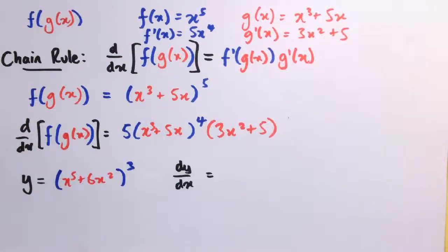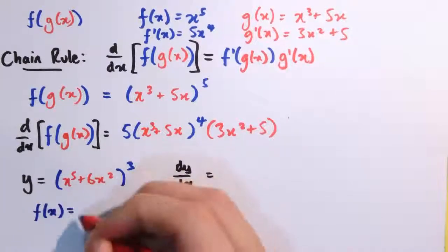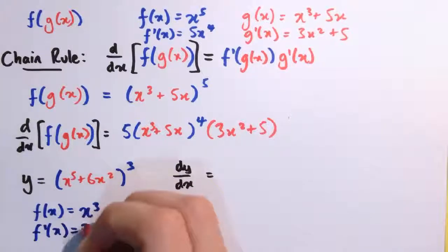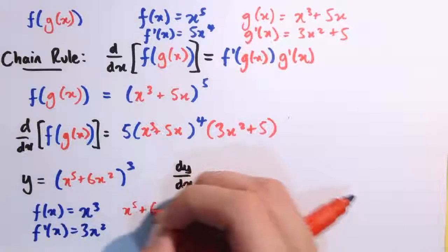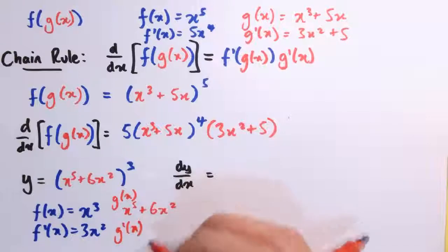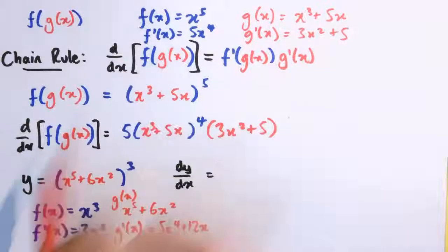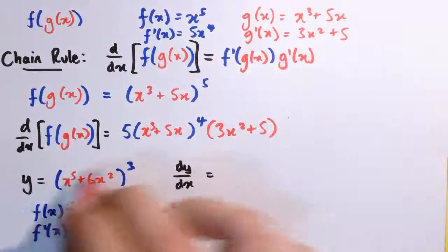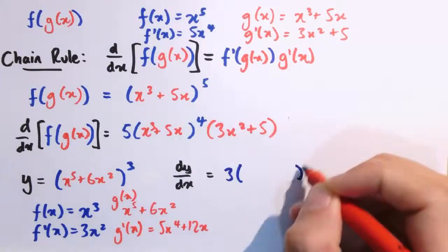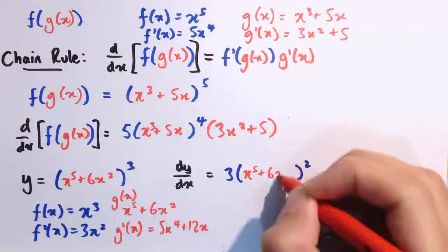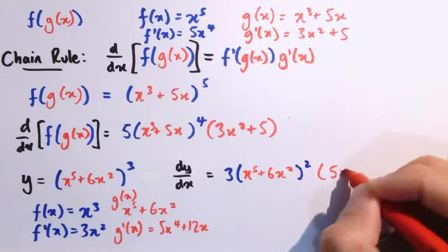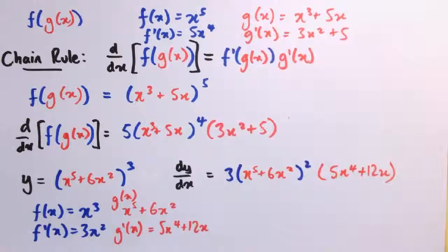Let's take another example. If y equals x to the 5 plus 6x squared, all cubed, then f of x is x cubed, so f dash of x is 3x squared. The inside function g is x to the 5 plus 6x squared, so g dash of x is 5x to the 4 plus 12x. Applying the chain rule, dy by dx equals 3 times x to the 5 plus 6x squared, all squared, multiplied by 5x to the 4 plus 12x. That's the final answer — I'll leave it in that form.